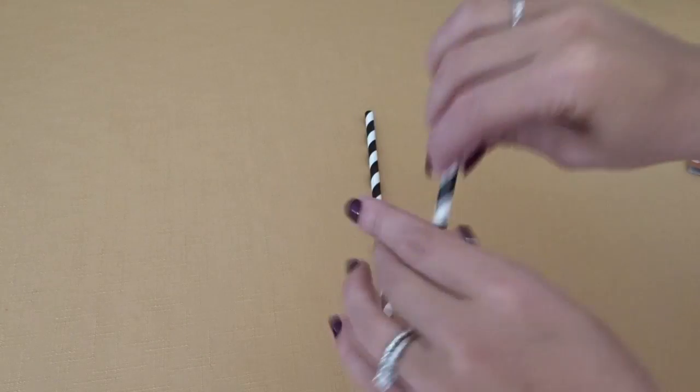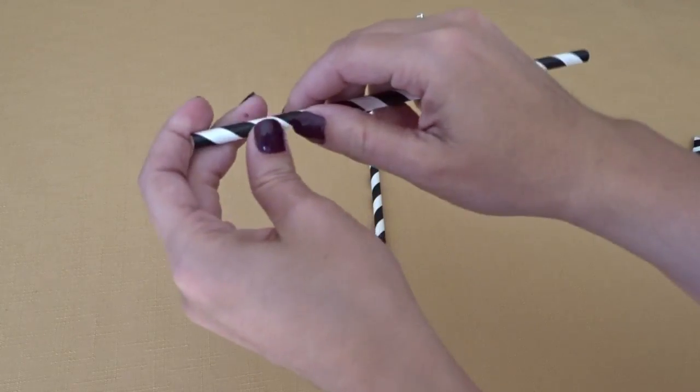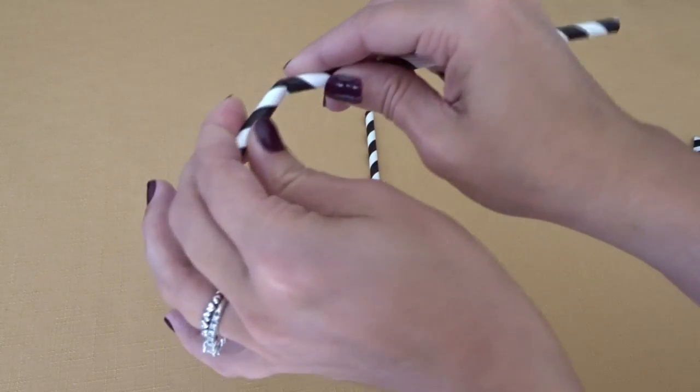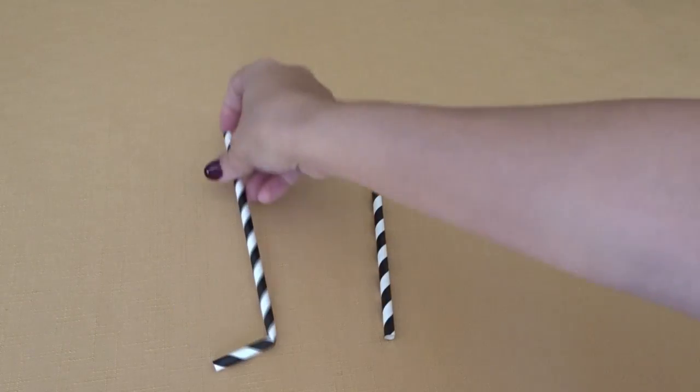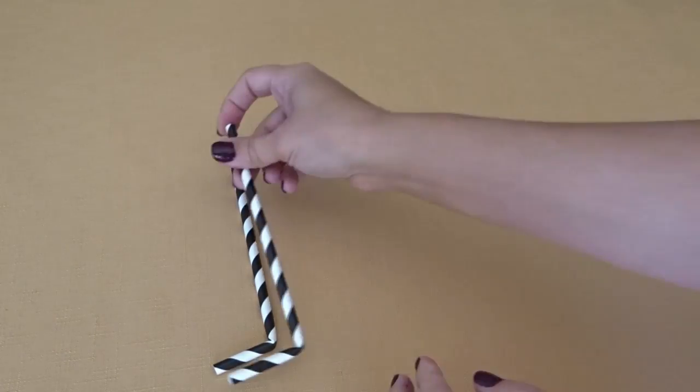We'll first start by making the witch's legs. Take your craft straws and then cut about an inch at the bottom in half. These will eventually become her shoes. Repeat with both straws.